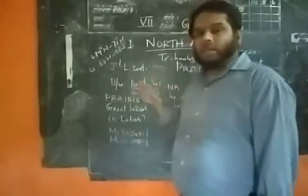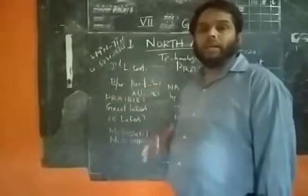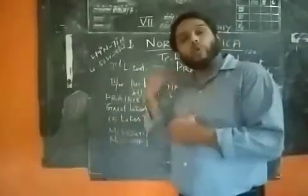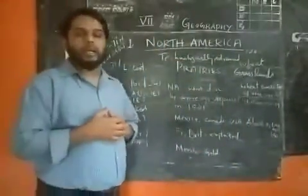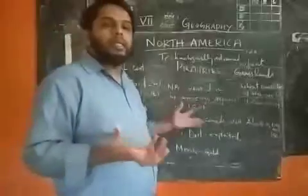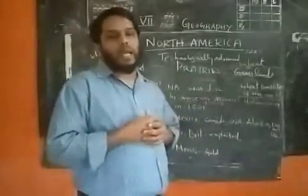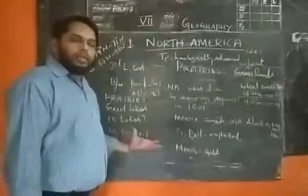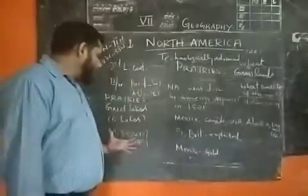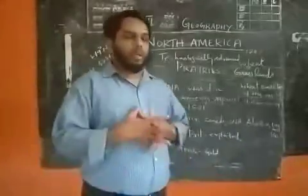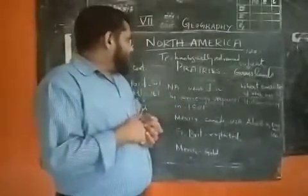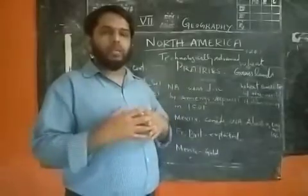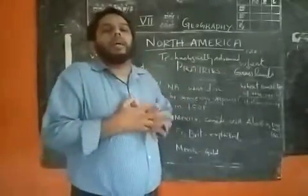The Prairies in North America have thousands of acres of land covered by wheat, which they export to foreign countries, earning a lot of profit. There are also five important lakes in North America, and Missouri and Mississippi are the important rivers. They cultivate immense amounts of wheat and after their own usage export to many countries, earning a lot of income.